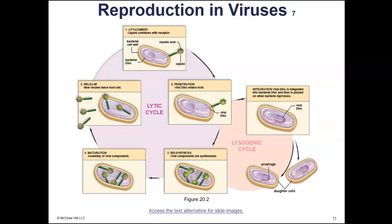In humans, we don't use the terms lytic and lysogenic cycles — we just say active and inactive — but it's similar. The inactive stage in humans is when the viral DNA is incorporated but not actively producing viruses. HIV can remain dormant for many years, as can other viruses. A person getting sick with something else or being under great stress can trigger host cells to begin actively producing viruses again. Once triggered in a bacterium, biosynthesis occurs, then maturation and release.